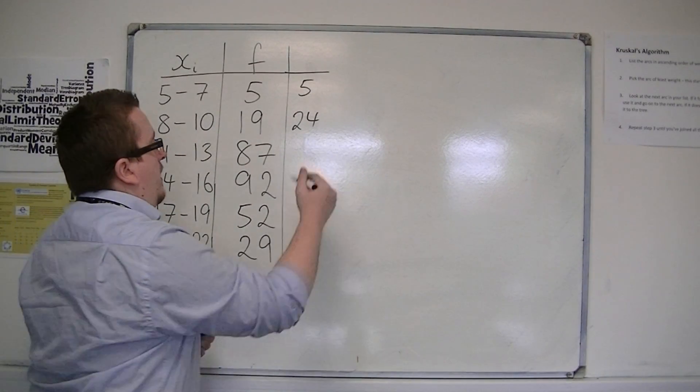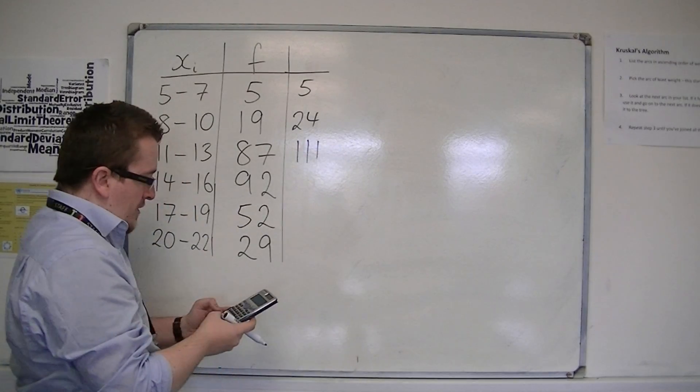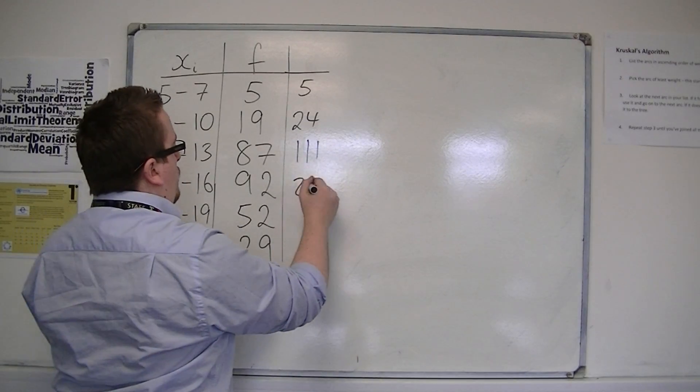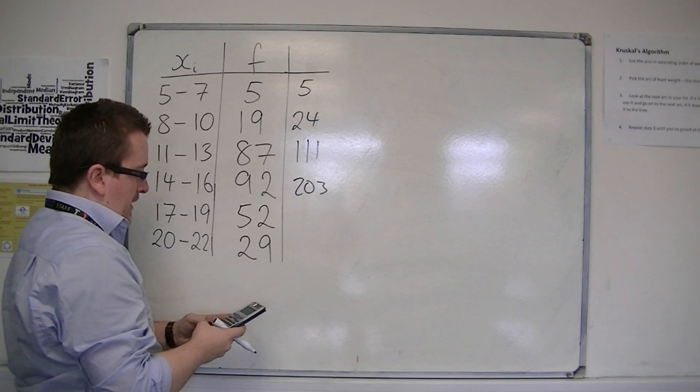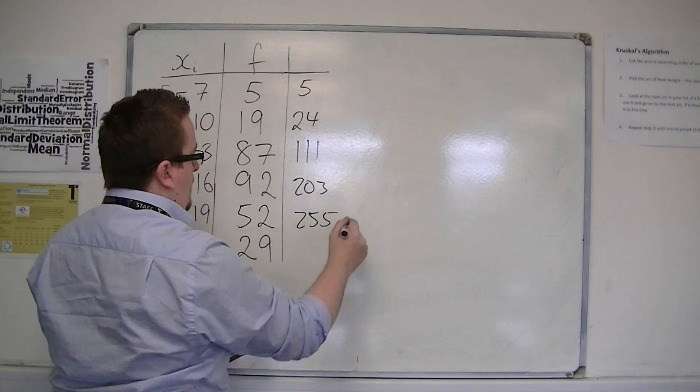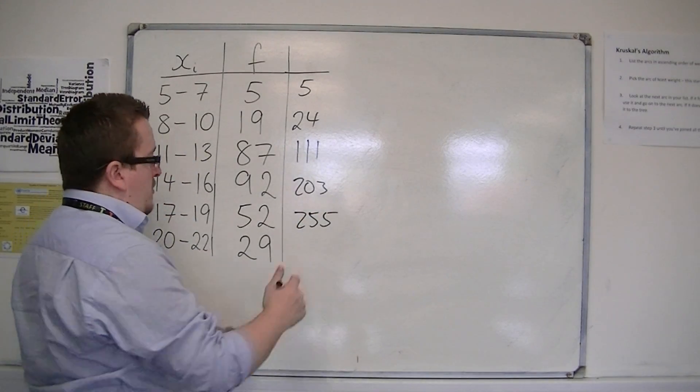So 24 plus 87, we've got 111. Then we add on 92, so 203. Then we'd add on 52, so 255. And then we add on 29, so 284.